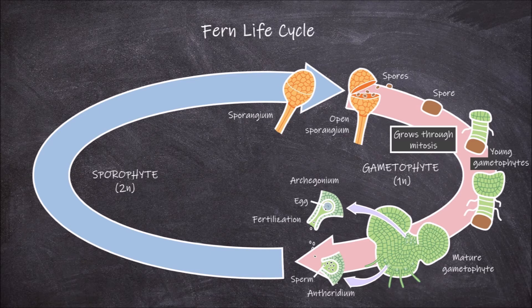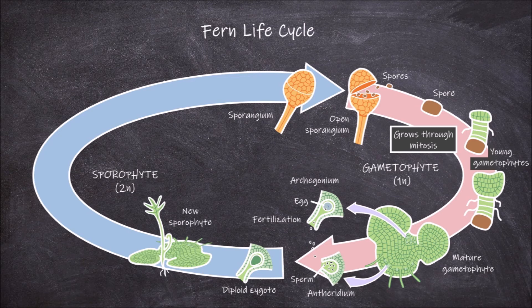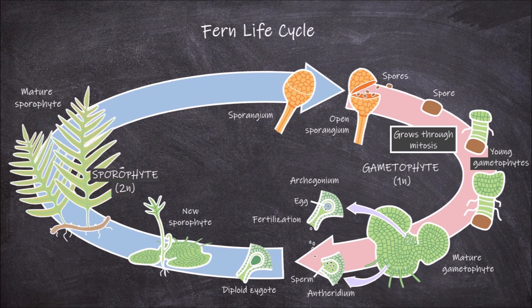Once fertilization occurs, the diploid zygote is formed within the archegonium. The zygote continues to grow through the process of mitosis, forming a diploid plant that is known as the sporophyte. As the sporophyte continues to grow, it will grow fronds. The sporophyte in ferns is actually the dominant generation and what we recognize and call a fern plant.